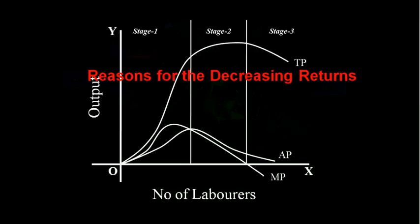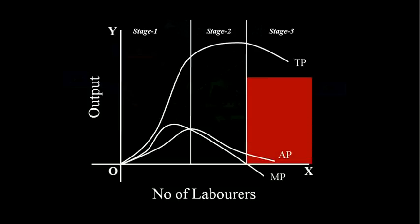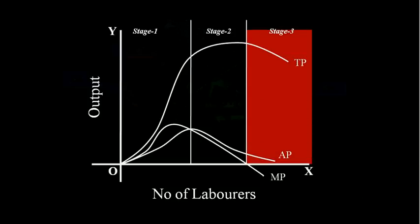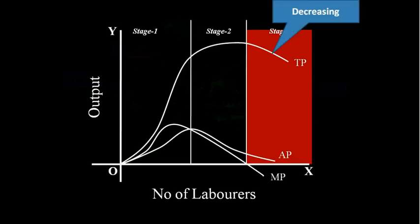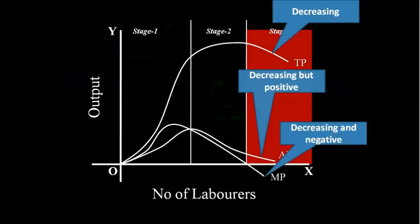Reasons for decreasing returns: non-optimal factor proportion and imperfect substitution of factors. Third stage: negative returns. Total product decreases. Average product decreases but remains positive. Marginal product also decreases but it is negative. That's all about the three stages.